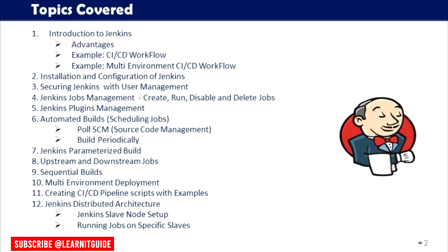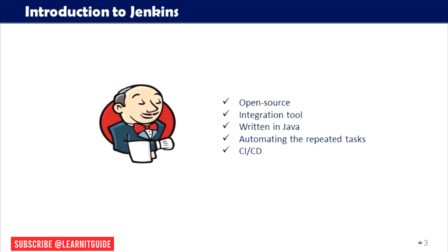Let's get started. Jenkins is an open source automation server and integration tool that will help us with the continuous integration and continuous delivery process in software development. It is widely used in the software industry to automate various aspects of the software development lifecycle. It can be used not only in software delivery, but also in other automations like system administration tasks, infrastructure provisioning, and many other things. It is written in Java.